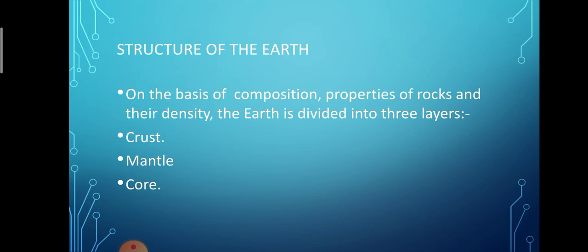The chapter starts with the topic structure of the earth. On the basis of composition, properties of rocks and their density, the earth is divided into three concentric layers. The layers are: the first one is crust, the second is mantle, and the third is core.